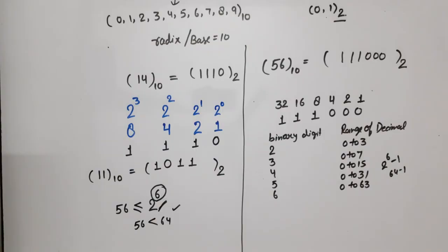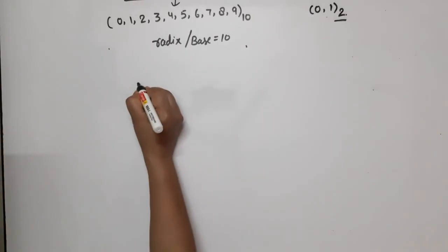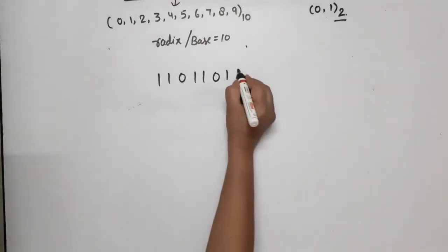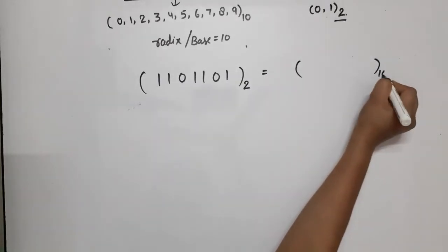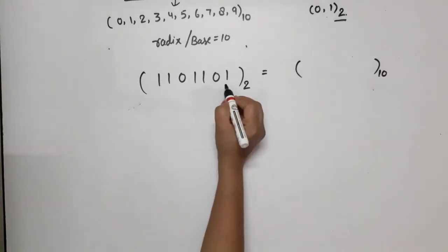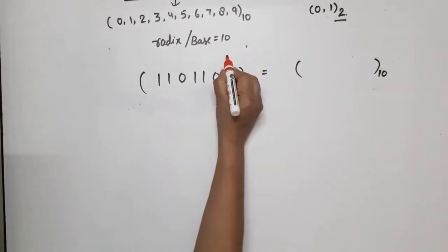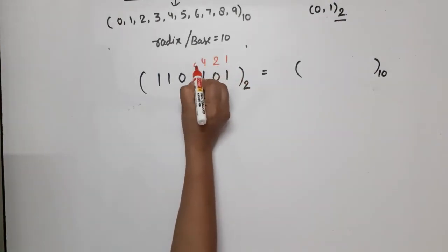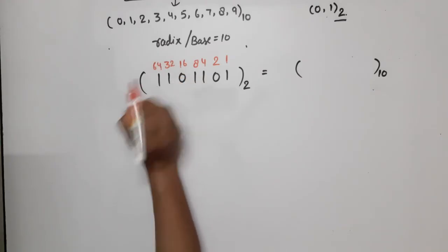Now let's do binary to decimal. Example 1: suppose I have 1101101 in binary. If this value is in binary, what is the value in decimal? We have to look at the positions. Wherever your numbers are available, we will write: 1, 2, 4, 8, 16, 32, and 64.